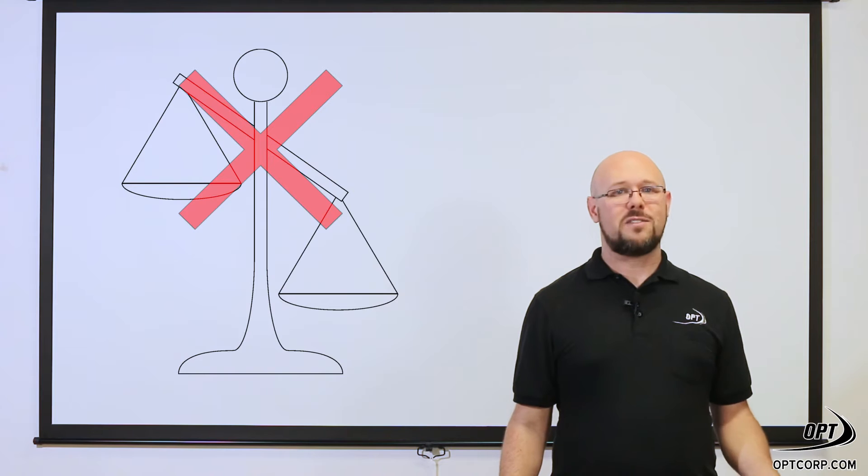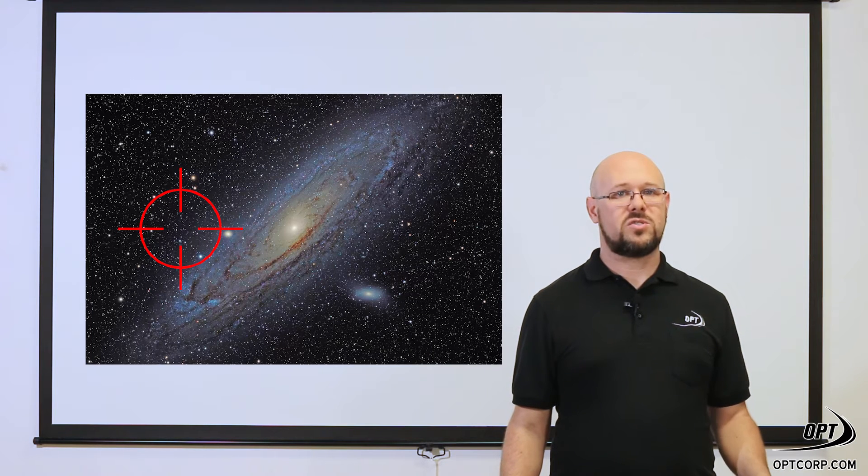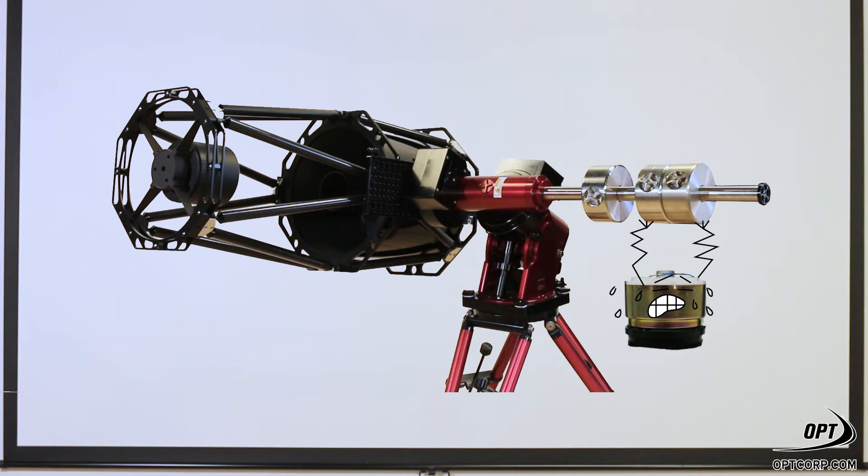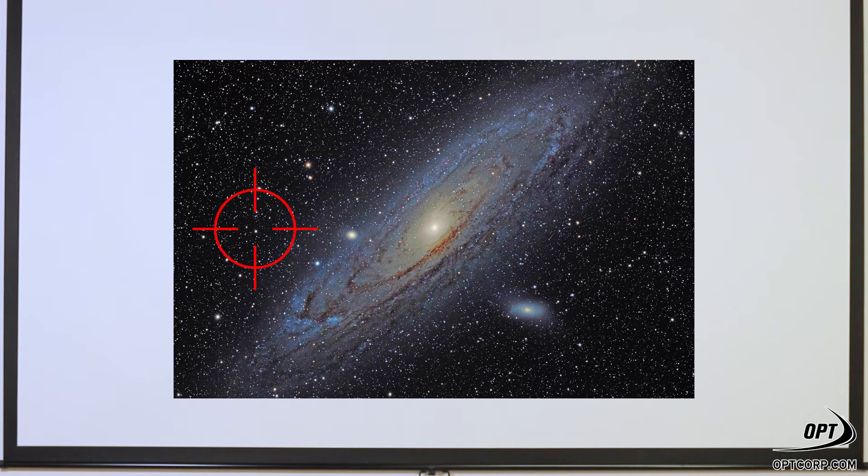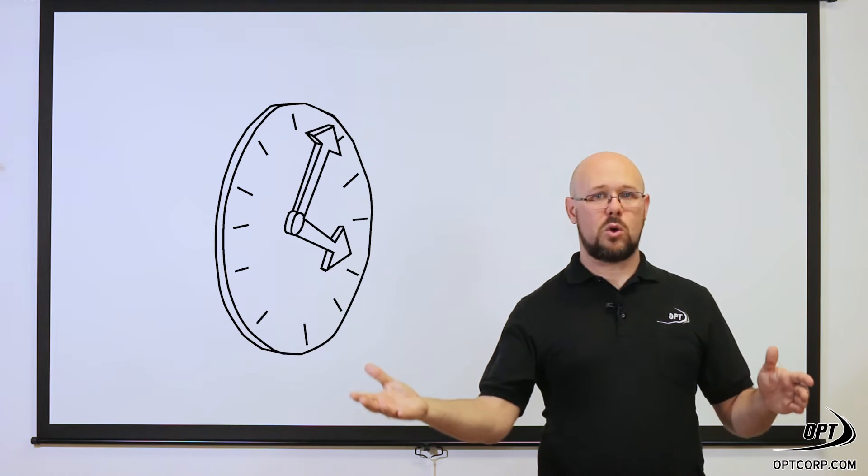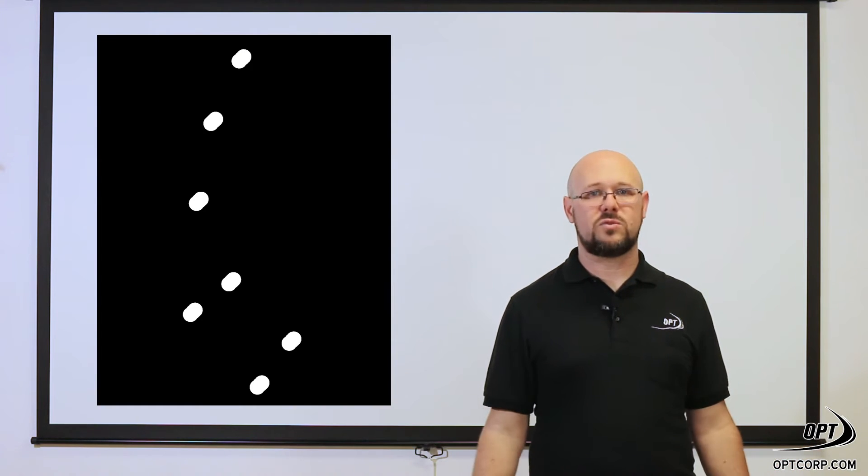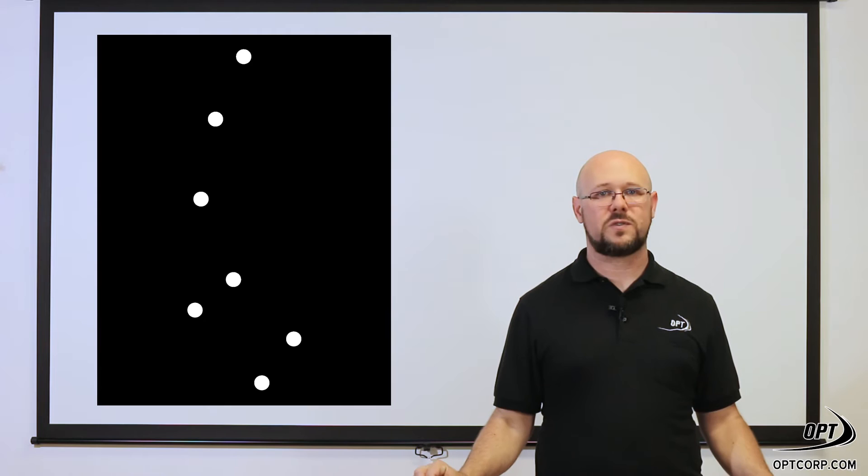Lastly, if you're out of balance, you're going to have issues with tracking accuracy. If the motor has to push too hard in one direction as opposed to the other, then your tracking may suffer. The mount may track slower than the sky is moving, giving you star trails when you want nice crisp points for stars.